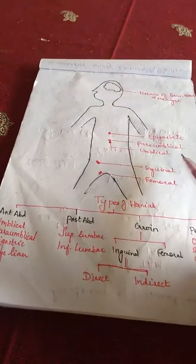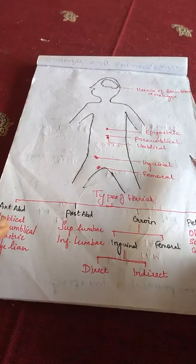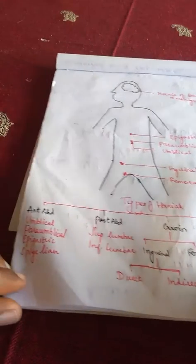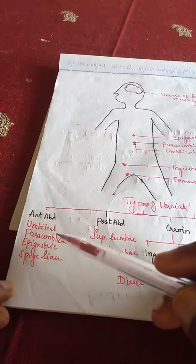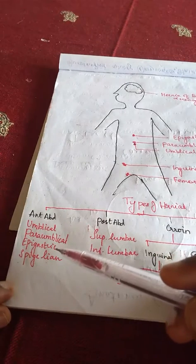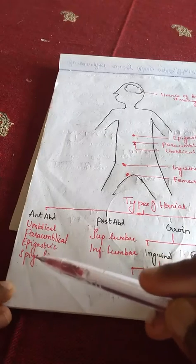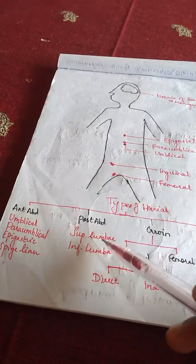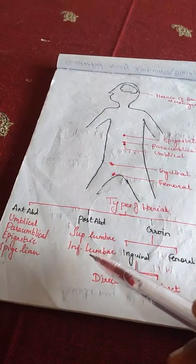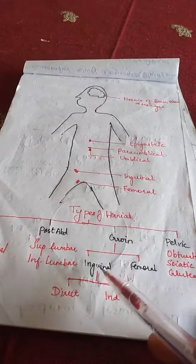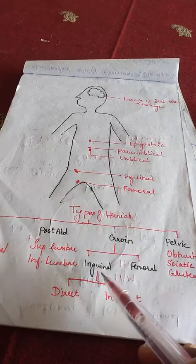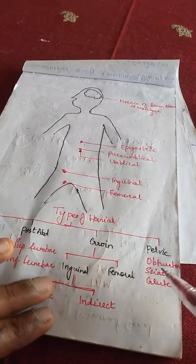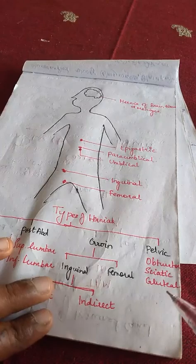A more systematic classification divides hernias into those in the anterior abdominal wall, posterior abdominal wall, groin, and the pelvic region. In the anterior abdominal wall we have umbilical, para-umbilical, epigastric, and spigelian hernias. The spigelian hernia occurs along the semilunar line. In the posterior abdominal wall, they can be superior or inferior lumbar hernias. In the groin region, inguinal or femoral hernia can occur. The inguinal hernia can further be divided into direct and indirect. The pelvic region has obturator, sciatic, or gluteal hernias.